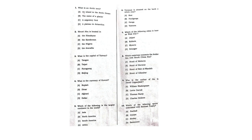First question: What is an Arctic tern? The answer is option A — it is a migratory bird. Question number 2: Mount Abu is located — the answer is option D.